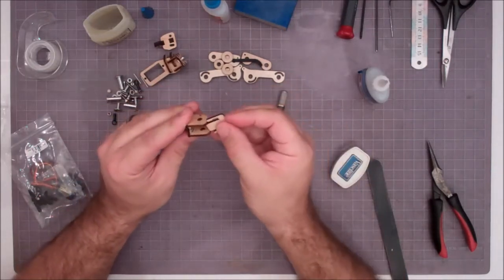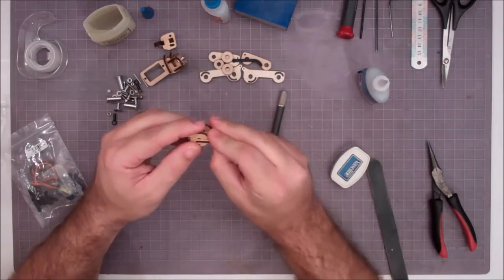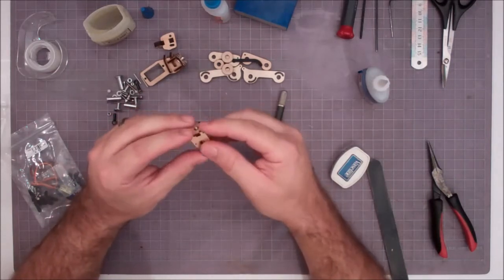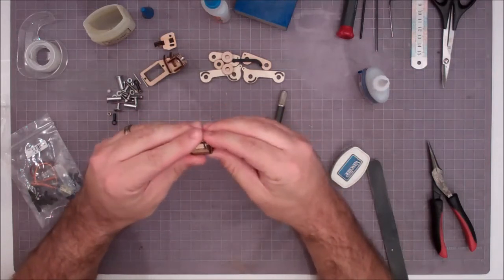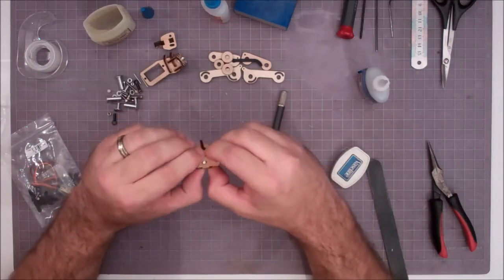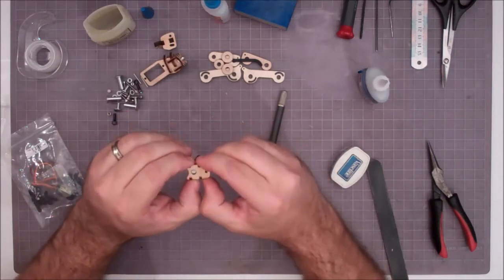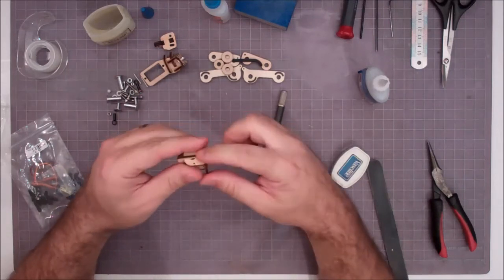And then we take our spacing jig and we slide it on there. Kind of helps hold everything and we just want to make sure that everything is tightly pressed together. The piece right there does not want to go together.